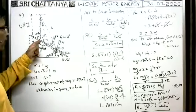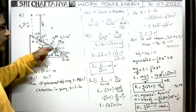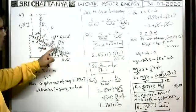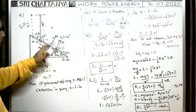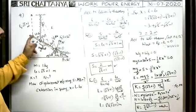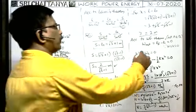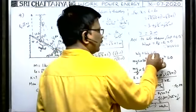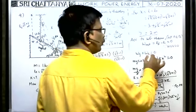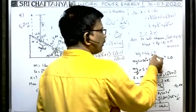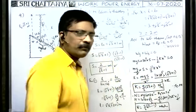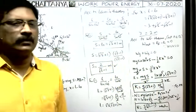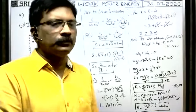If friction were present, the friction force would act on the ring along the rod upwards, and we would need to add a term: minus F × S (negative work by friction) in the work-energy equation.